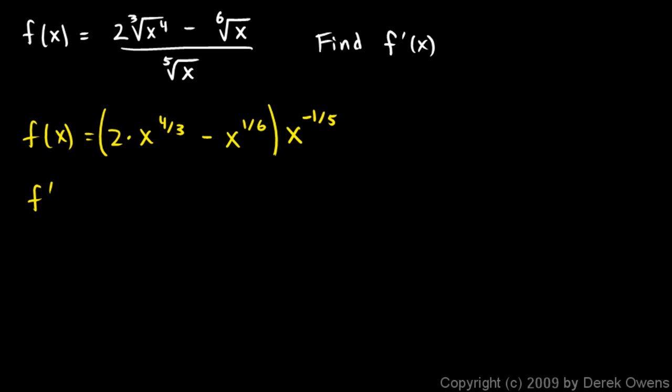The f of x, I still haven't started taking a derivative. This is f of x, not f prime over here. f of x is going to be 2 times x to the 4 thirds times x to the negative 1 fifth. And then I'll have minus x to the 1 sixth times x to the negative 1 fifth. Now these can be combined into a single x and so can these.